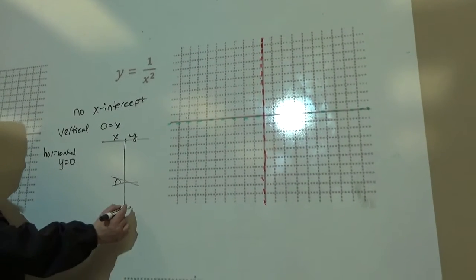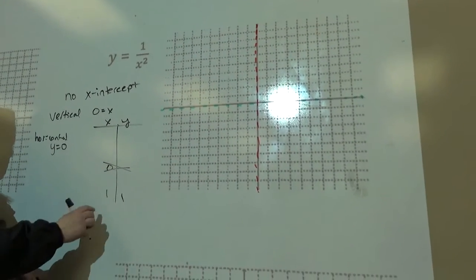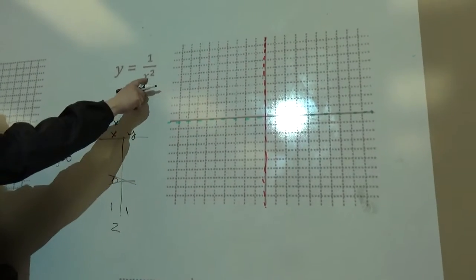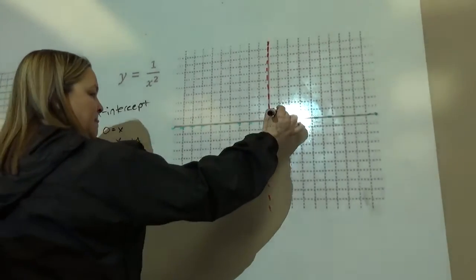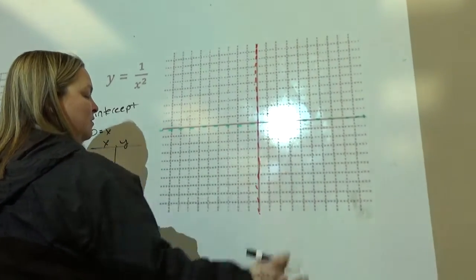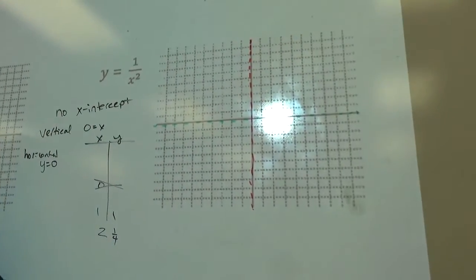At one, it's one. At two, two squared is four, so it would be one-fourth. So I've got one-one and two-one-fourth. I can kind of see what that side is doing.